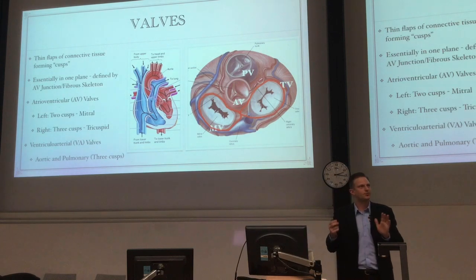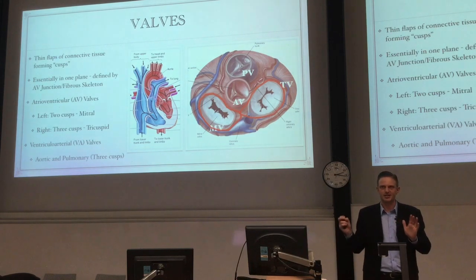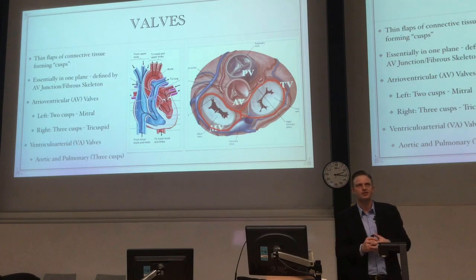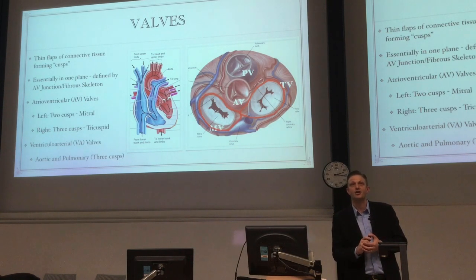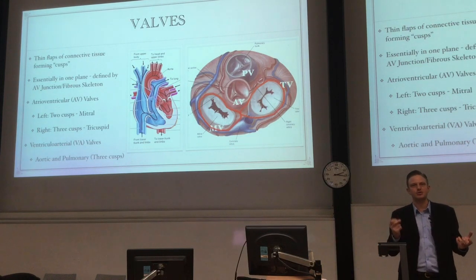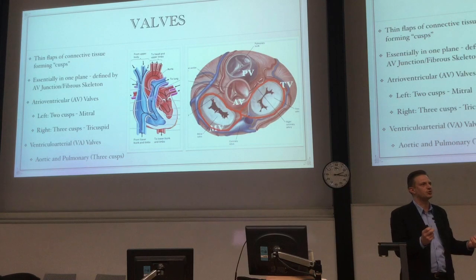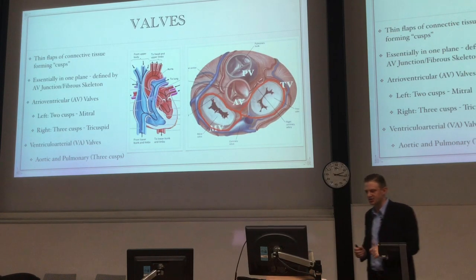The fibrous skeleton has another really important function: it's an insulator. It actually stops electrical action potentials from crossing over from the atria to the ventricles outside of what they're supposed to do.